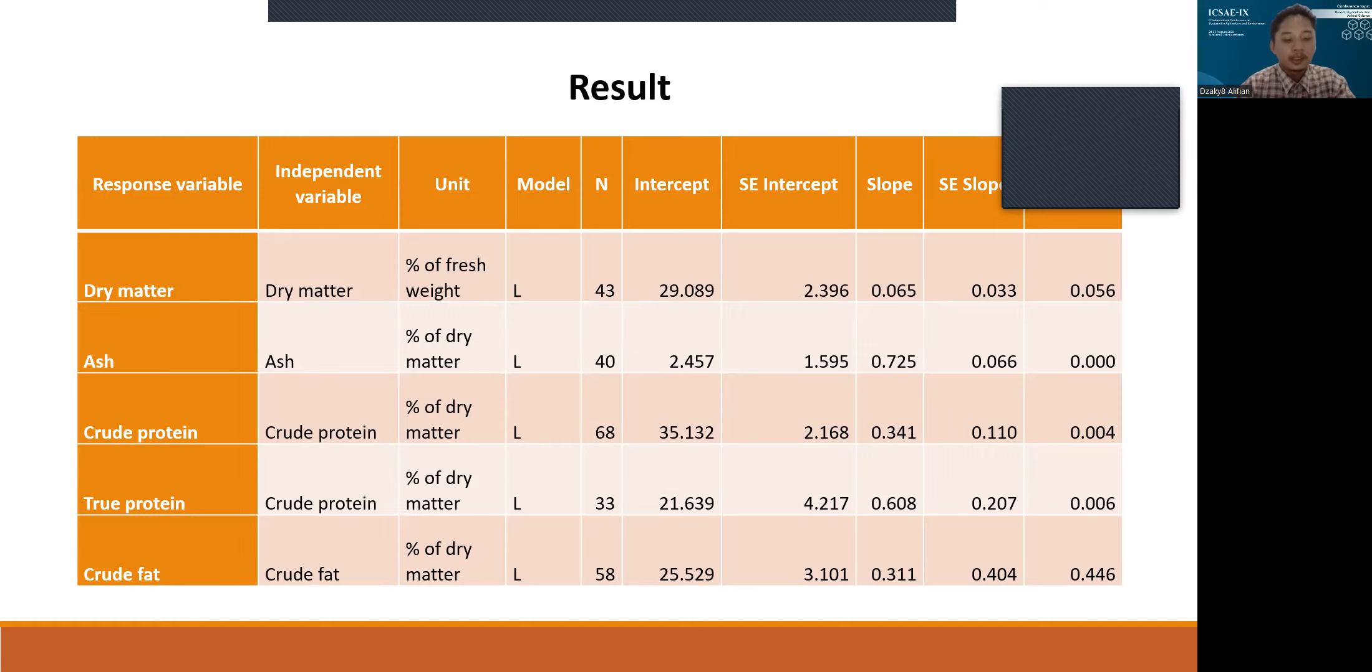Crude protein content affects the pre-pupa protein content of Hermetia illucens. The crude protein content in our study was around 22% to 52%. The difference in balance of crude fat and crude protein in Hermetia illucens affects crude protein levels.